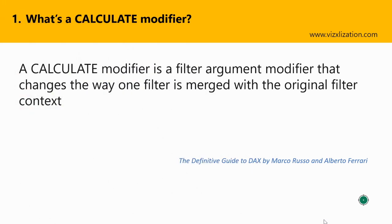Theory is really important here. A calculated modifier is a filter argument modifier that changes the way one filter is merged with the original filter context. Please keep that in mind.